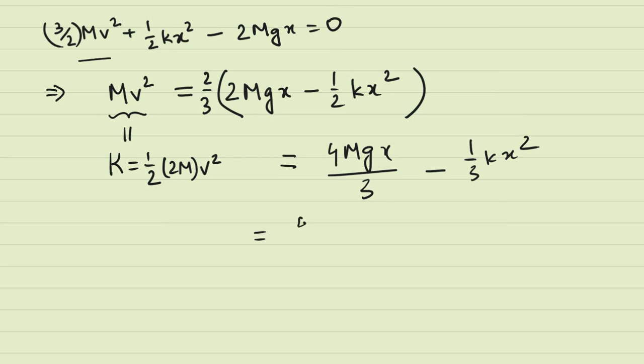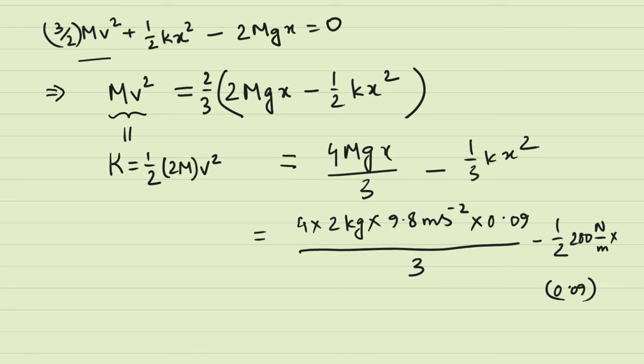So if we plug in, we have 4mgx divided by 3 minus 1 third kx squared. We have 4 times 2 kilograms times 9.8 m per second squared times x, so x is 0.09 divided by 3 minus 1 third. And then for k, we have 200 newton per meter times x squared, so which is 0.09 whole squared.